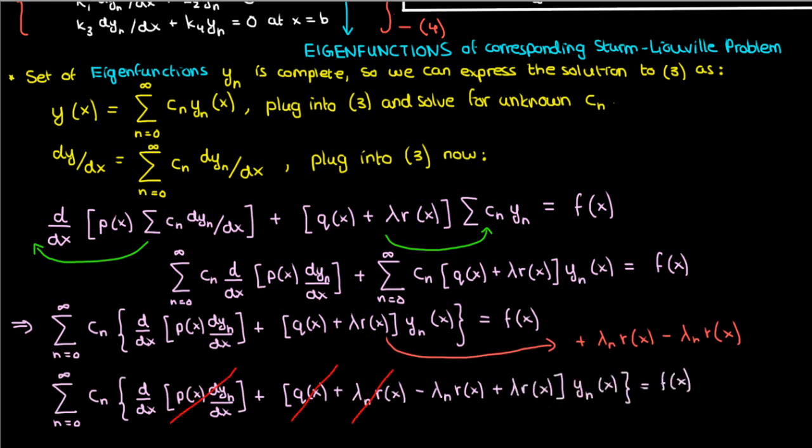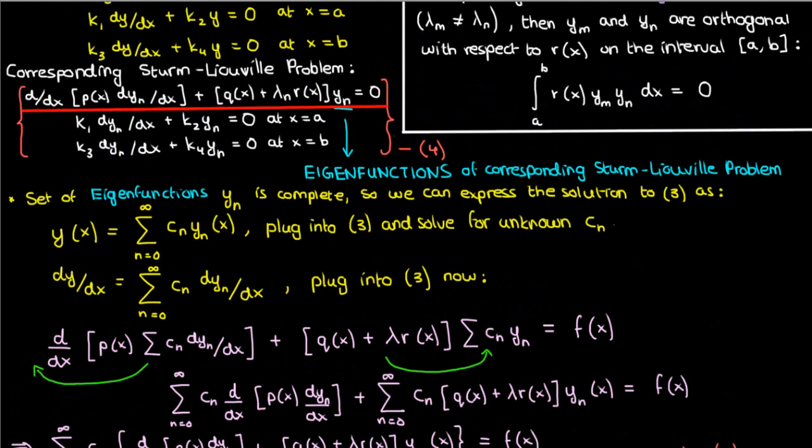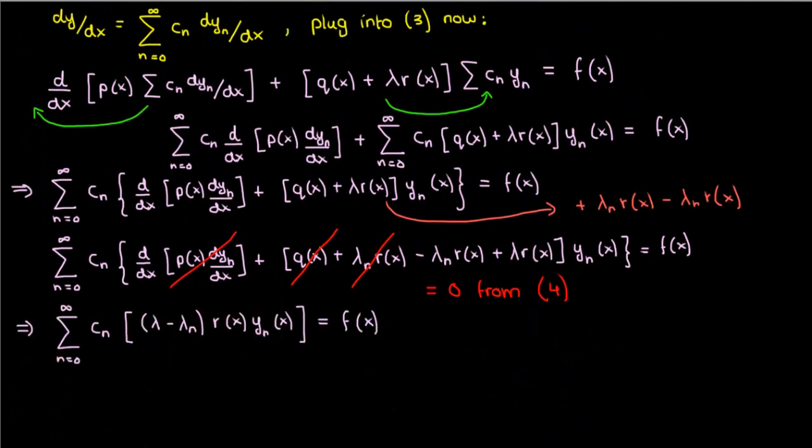These terms in the summation involving y sub n are equal to 0, according to equation 4, which means that this is what we'll be left with.